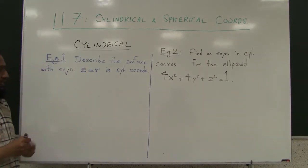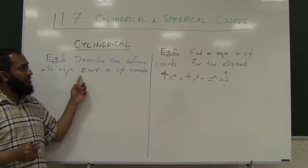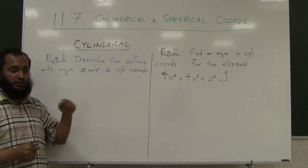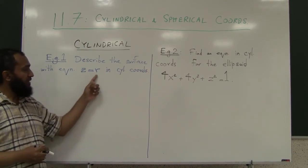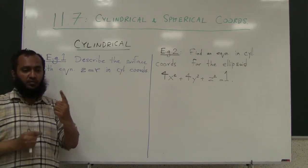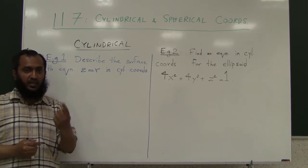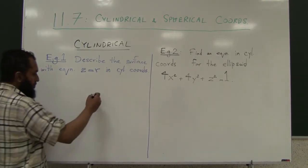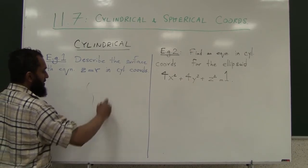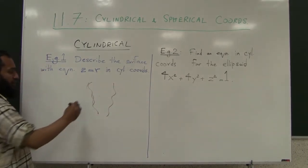Notice that theta, the angle theta, does not appear in the equation, which means as long as you satisfy this, theta can be anything. This tells you that the traces are probably looking like circles because theta can be anything.